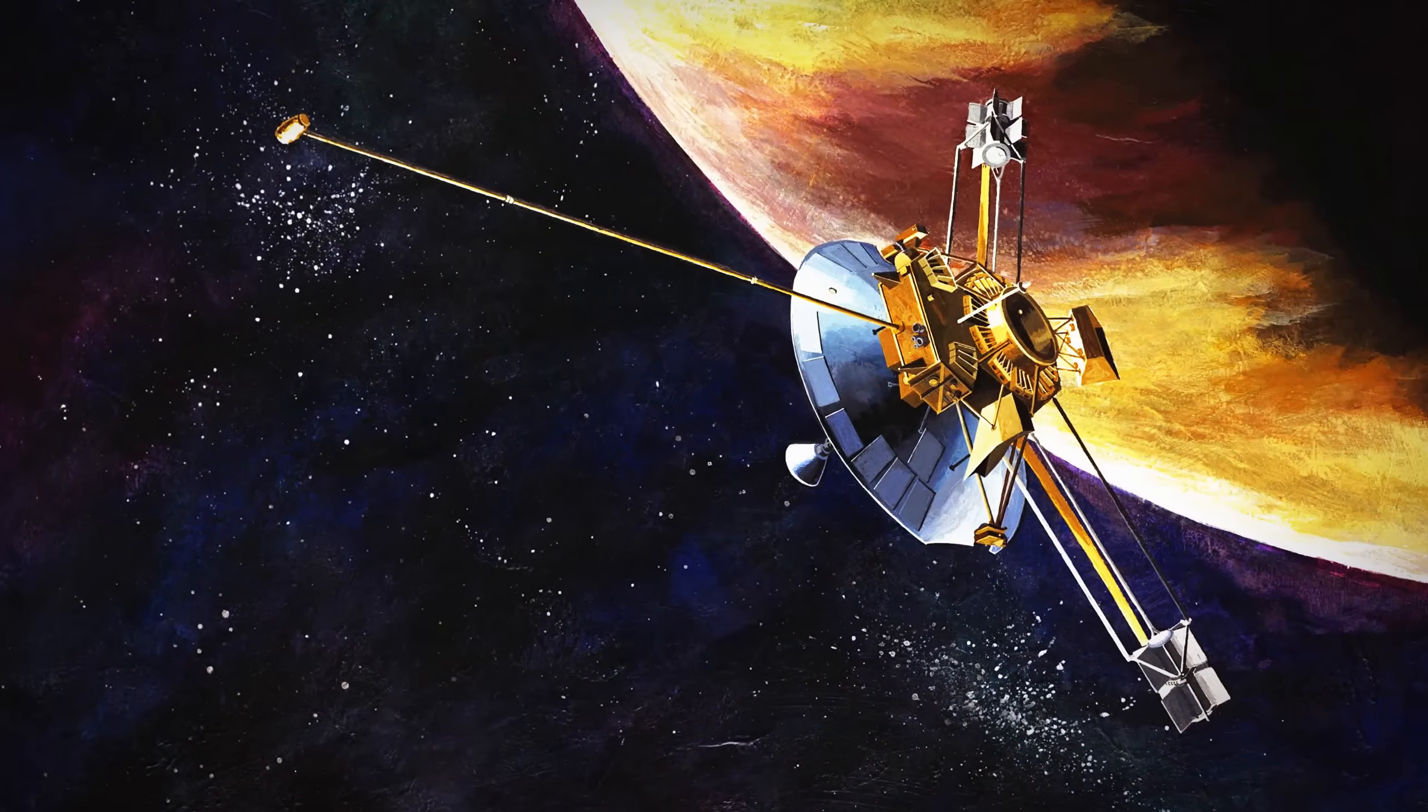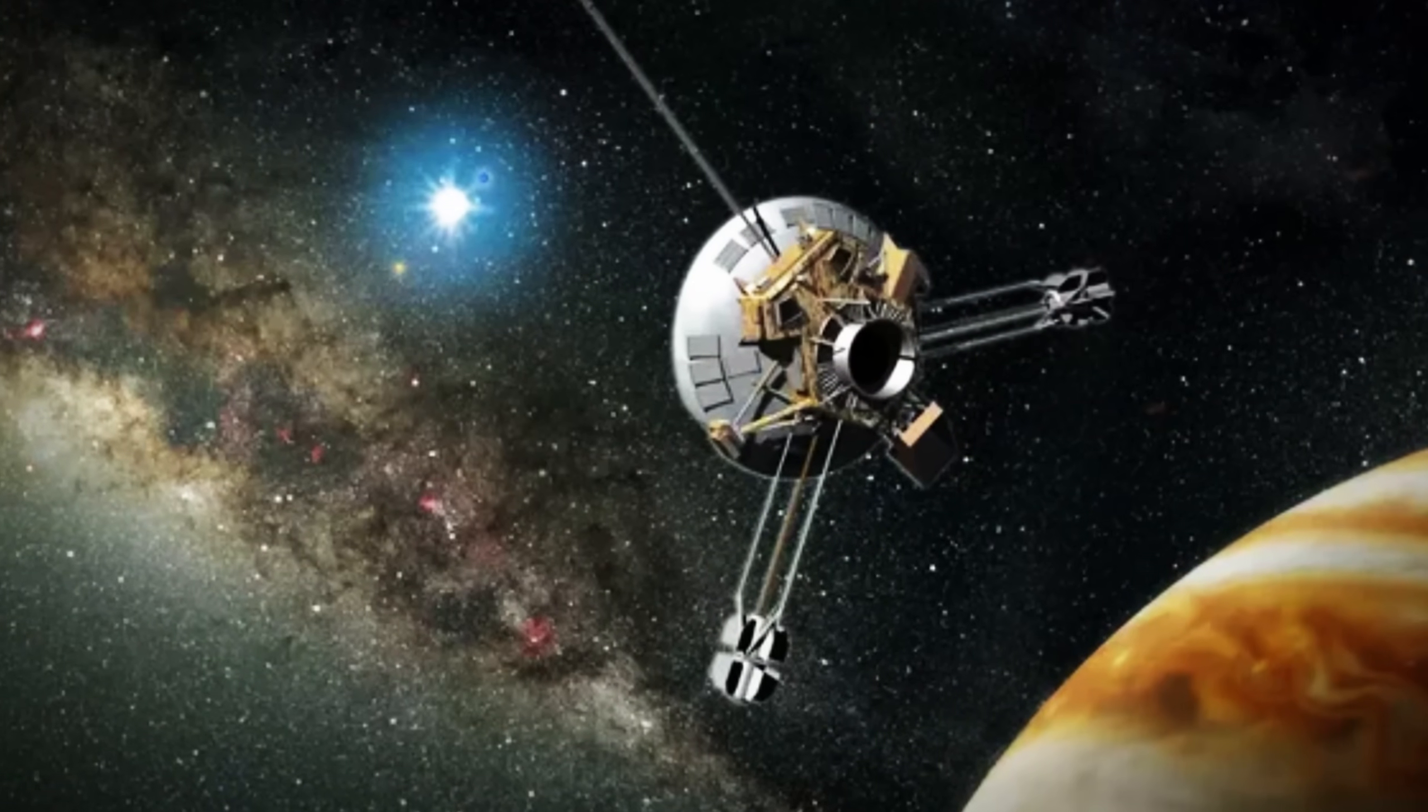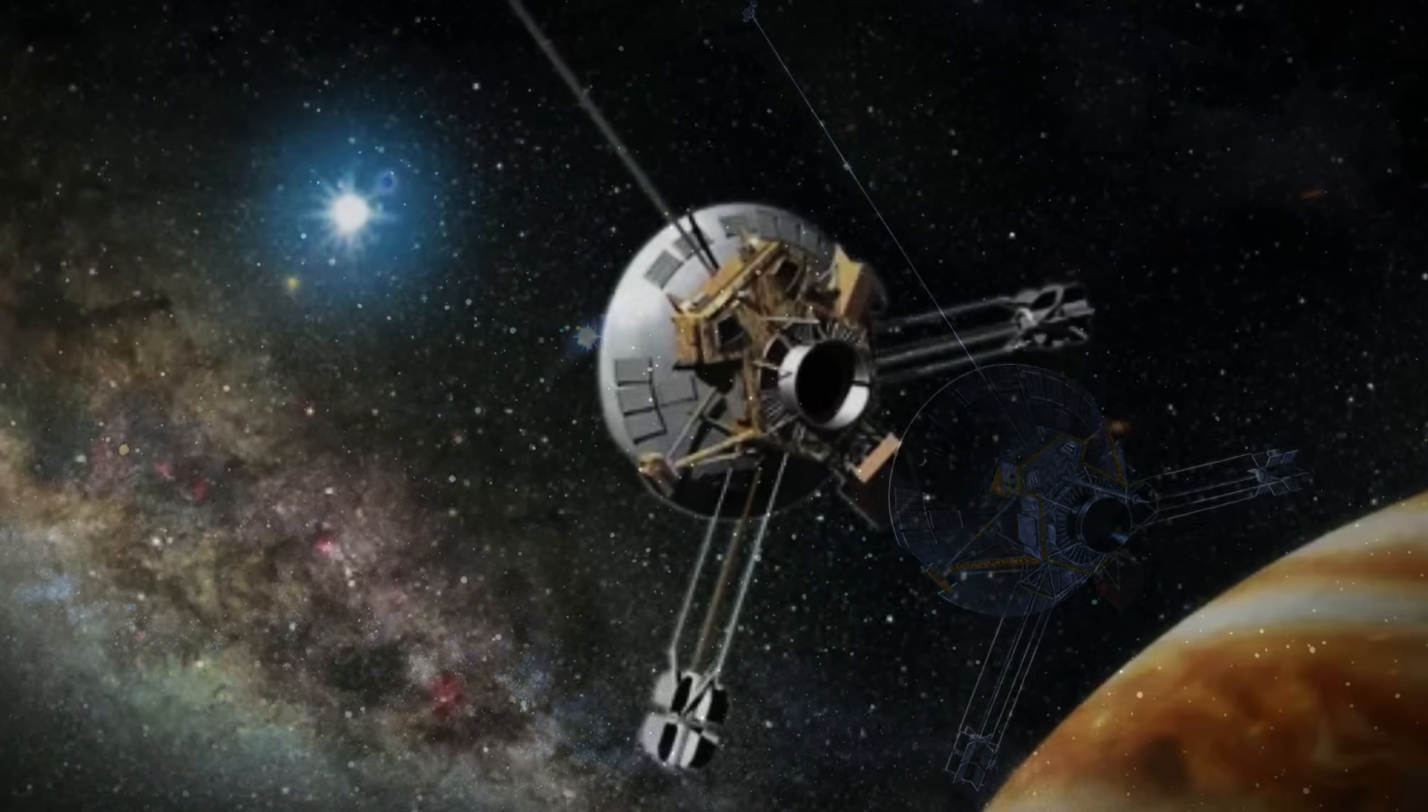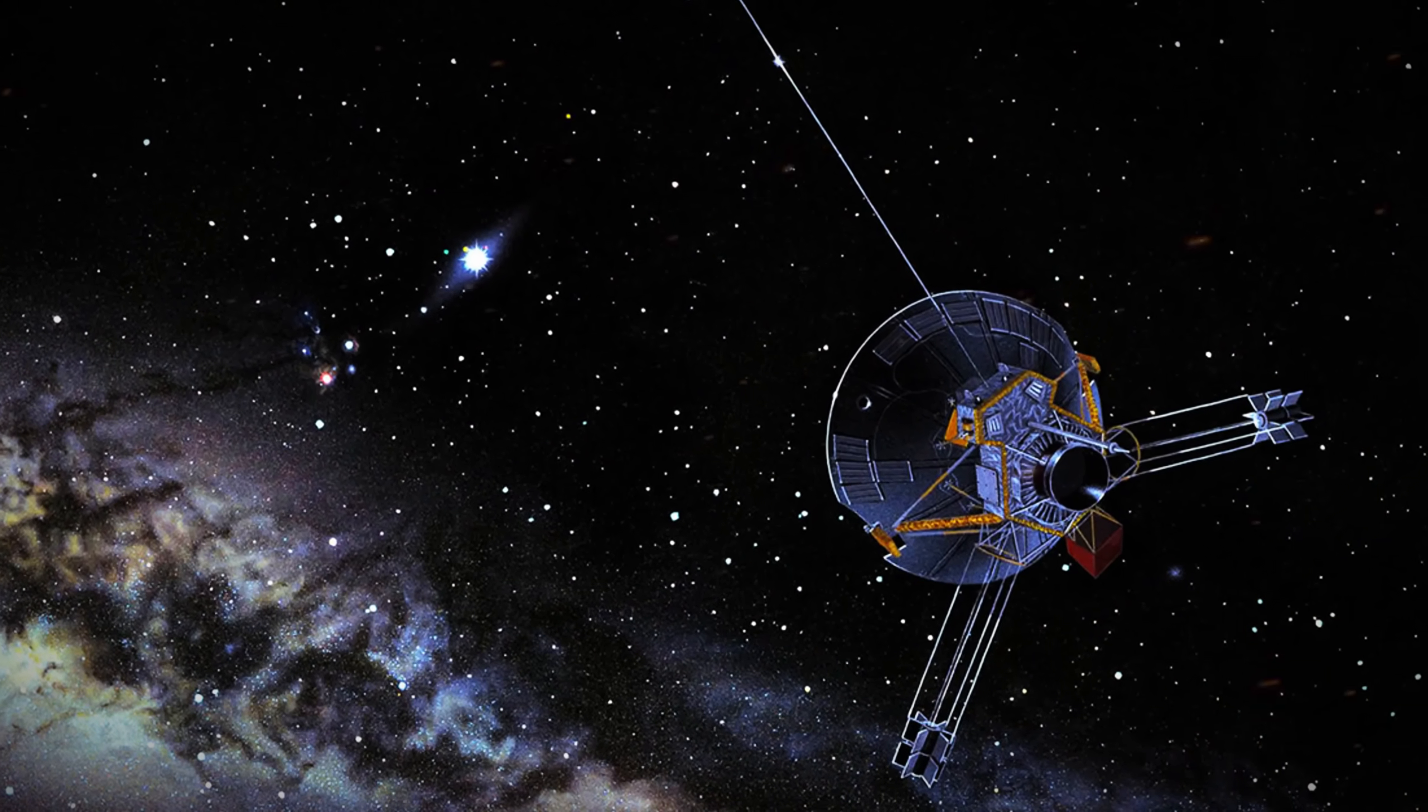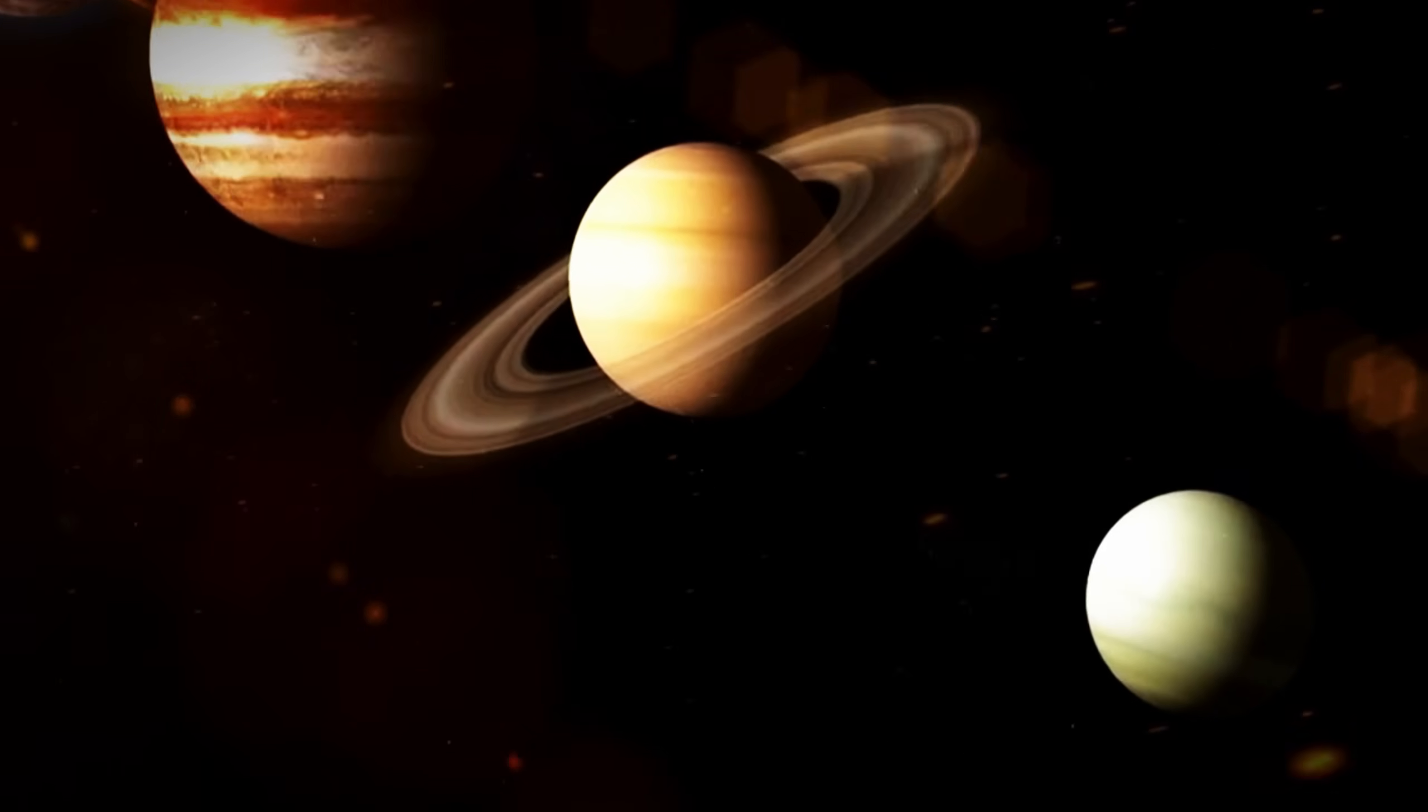Our understanding of the Kuiper Belt has grown thanks to numerous missions, beginning with NASA's Pioneer 10. Launched in 1972, Pioneer 10 was the first spacecraft to cross the asteroid belt and study Jupiter. In 1983, it became the first spacecraft to enter the Kuiper Belt, although it didn't explore any of the icy worlds there, as only Pluto had been discovered by then. Its main mission was to study Jupiter, but its journey beyond the known planets opened the door to future exploration.